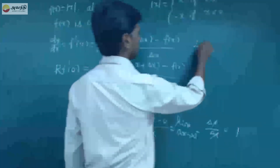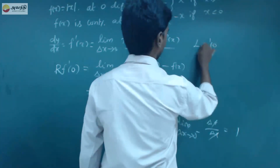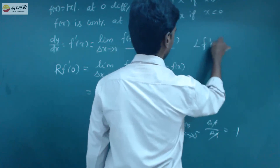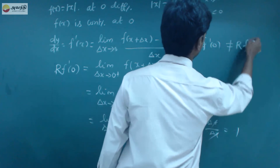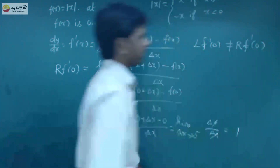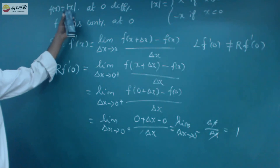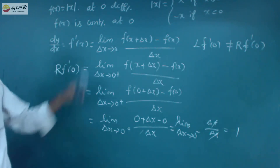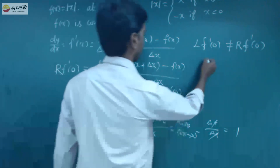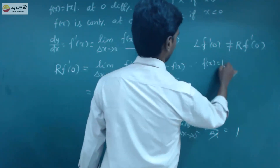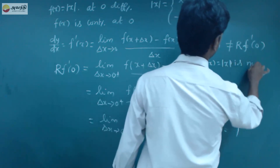The left-hand side limit (−1) is not equal to the right-hand side limit (+1). Therefore, f'(0) does not exist, and f(x) = |x| is not differentiable at x = 0.